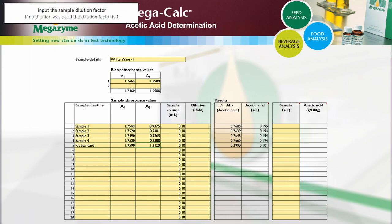If dilution of the sample has been performed, then input the dilution factor used. If no further dilution was performed, the dilution factor is 1.